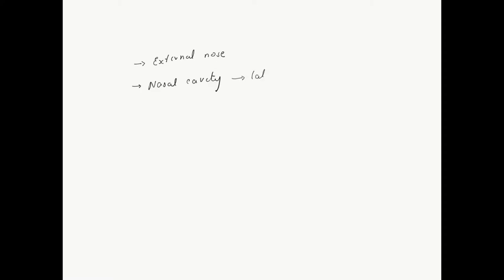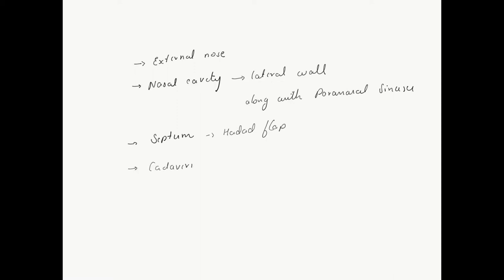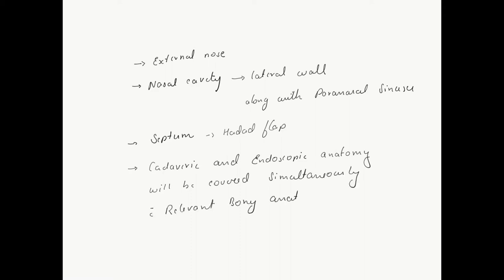The discussion will proceed in this way: first I will describe the external nose, then we will focus on the nasal cavity, predominantly on the lateral wall along with the paranasal sinuses. The septum and its clinical implications will be dealt with. The cadaveric anatomy and endoscopic anatomy will be described hand in hand, and the relevant bony anatomy will also be discussed. At the end we will revise with an endoscopic video.